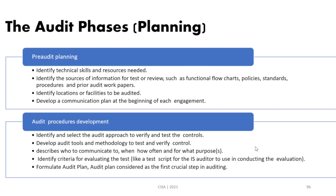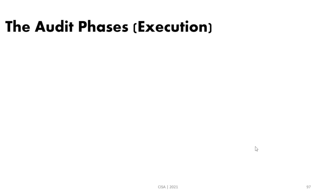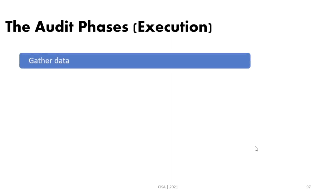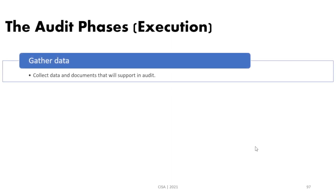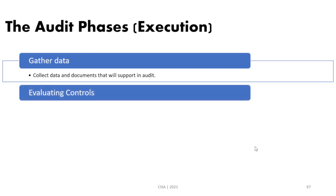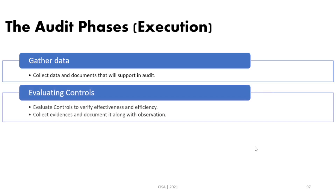After preparing the plan and mobilizing all resources, we start audit execution. In audit execution we begin by gathering data — the information on which we will base our conclusions. Then we do evaluation of controls.